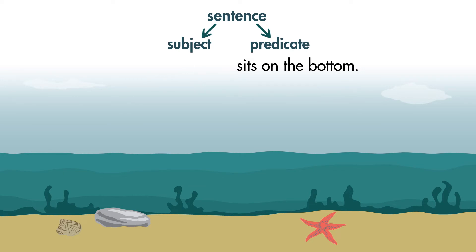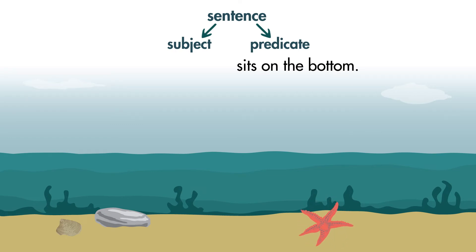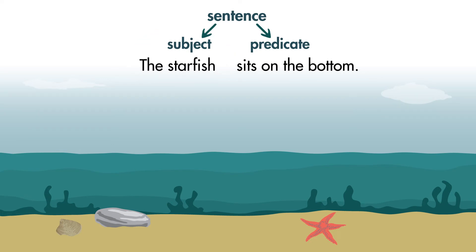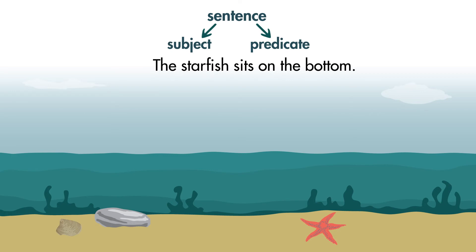How can we fix this fragment to make a complete sentence? We need to add a subject. What sits on the bottom? The starfish. The starfish is the subject. Now we have a complete sentence: The starfish sits on the bottom.